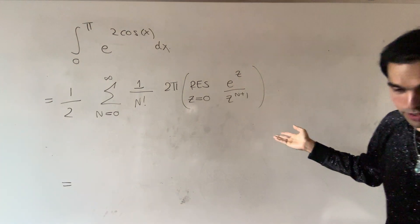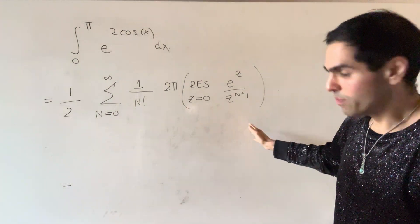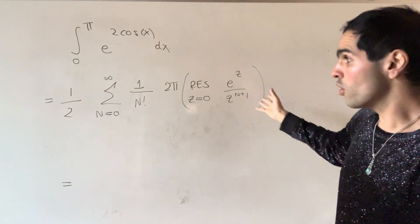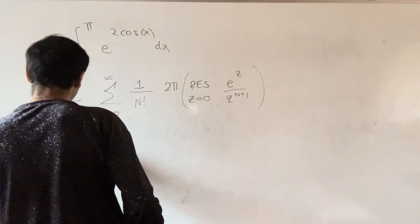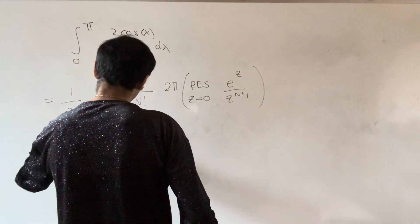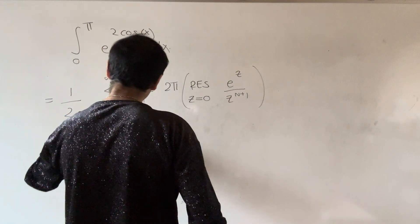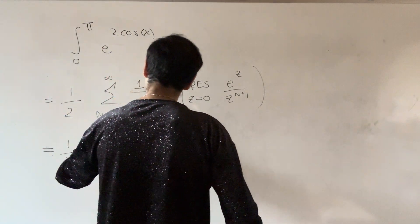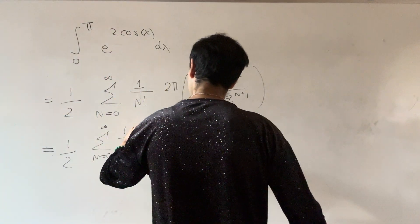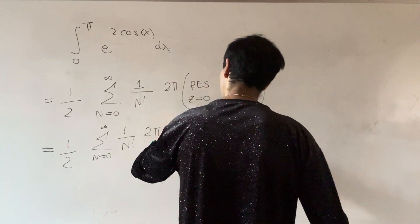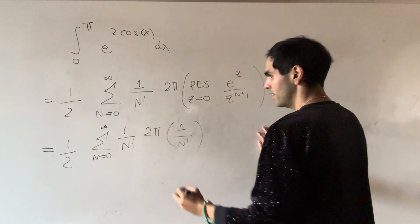Now, but, we just found out, that that residue is one over n factorial. So, this becomes, one half, sum, from zero to infinity, of one over n factorial, two pi, and now, one over n factorial.